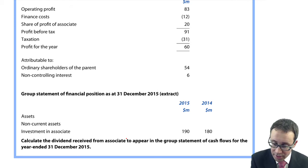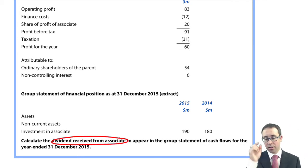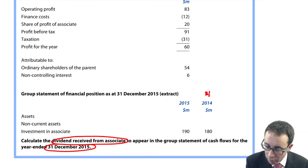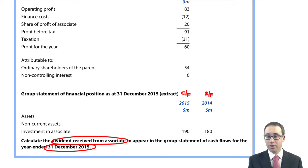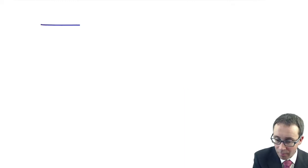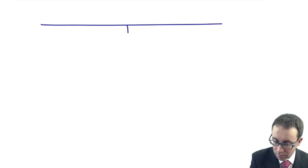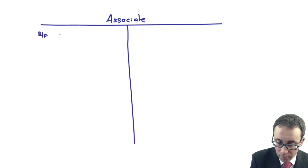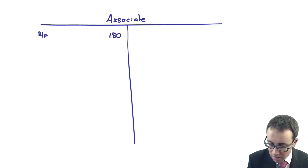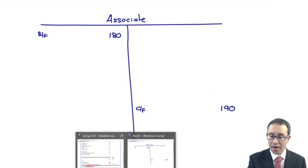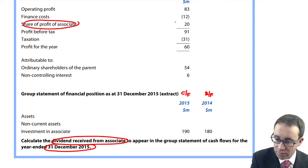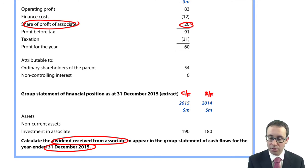Let's go through and have a look at the example. It says: calculate the dividend received from the associate to appear in the group statement of cash flows for the year ended December 2015. So you've got your brought forward figure — is it 180 for the associate? And is the carry forward 190? So I've got my associate account: the brought forward is 180 and the carry forward is 190. What I need to find now is the profit figure — the share of profit of associate, which is 20 through the statement of profit or loss.